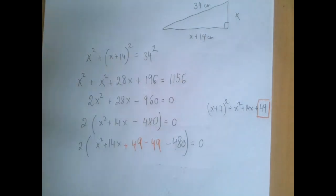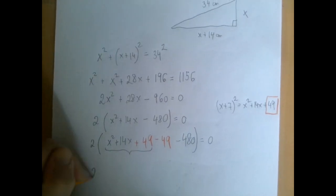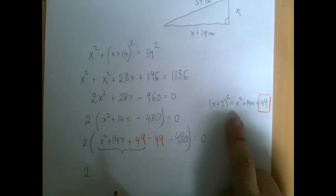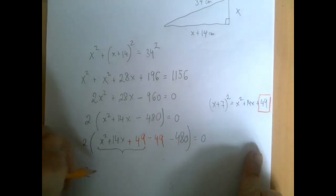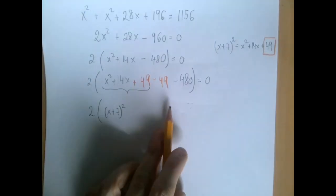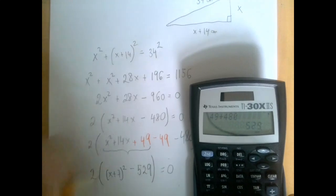The first three terms get absorbed into the complete square: x squared plus 14x plus 49 is (x plus 7) squared. The last two numbers — when we combine negative 49 and negative 480 — we have to add the absolute values, and so we get 529.